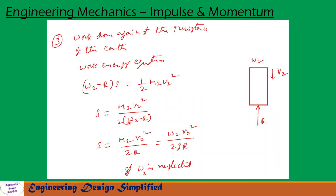Since w2 is much less than r we can neglect w2, giving s = m2·v2² / (2r). Writing m2 = w2/g, the equation becomes s = w2·v2² / (2·g·r).